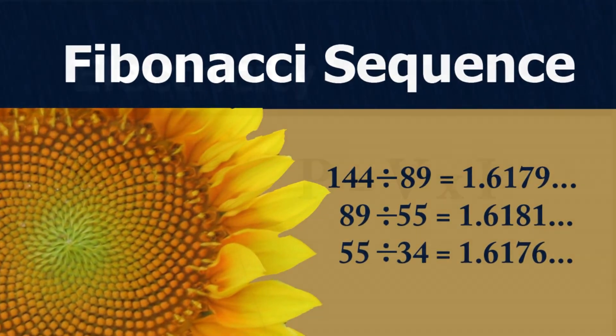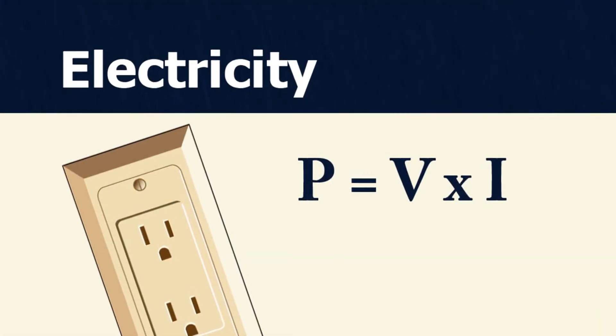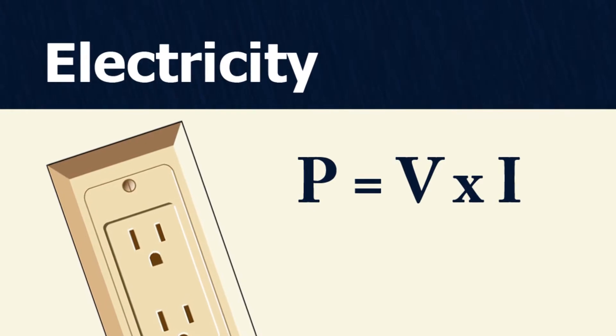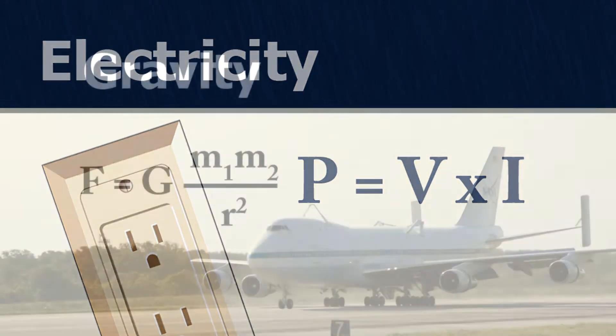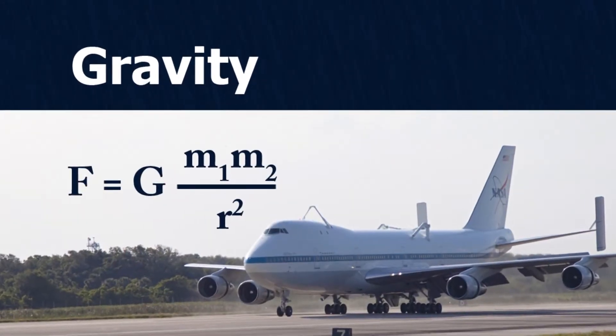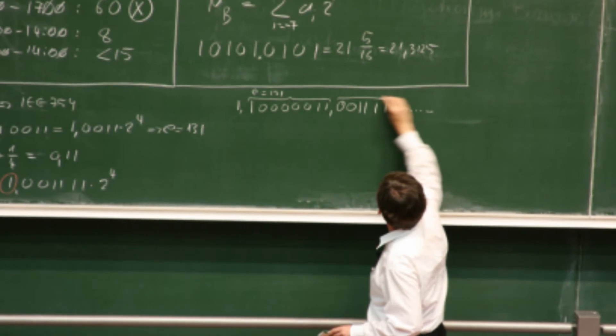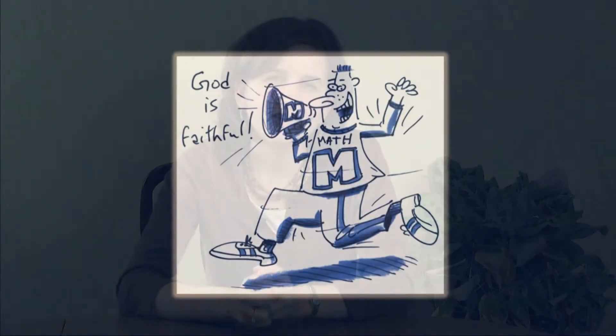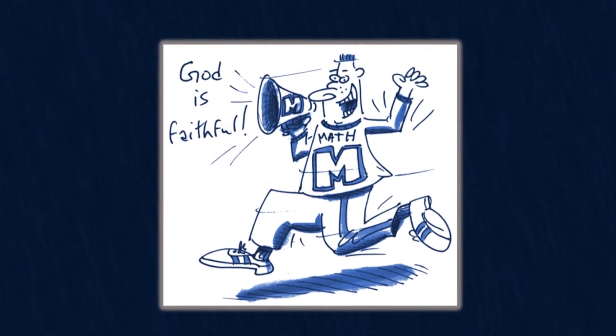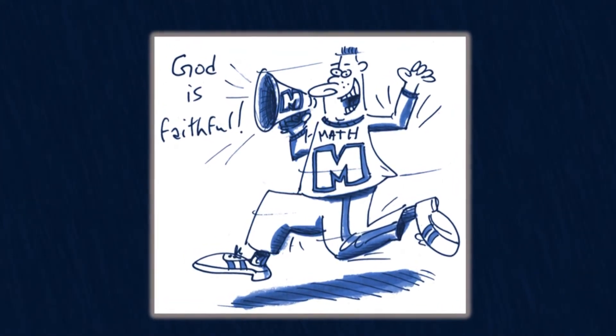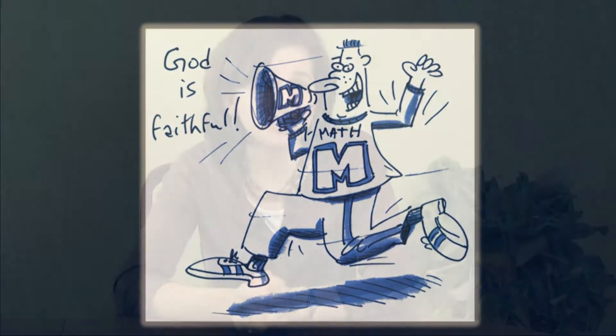Well, why are there consistencies all around us? Because God — a faithful, consistent God — created them and sustains them day in and day out. He is the one holding all of those consistencies together that math is but a way of describing. Which means every time you solve an addition problem, a multiplication problem, or any math problem and see that it still works, it is shouting out at you that God is still on his throne. He is still faithfully holding all things together, and you can trust him.